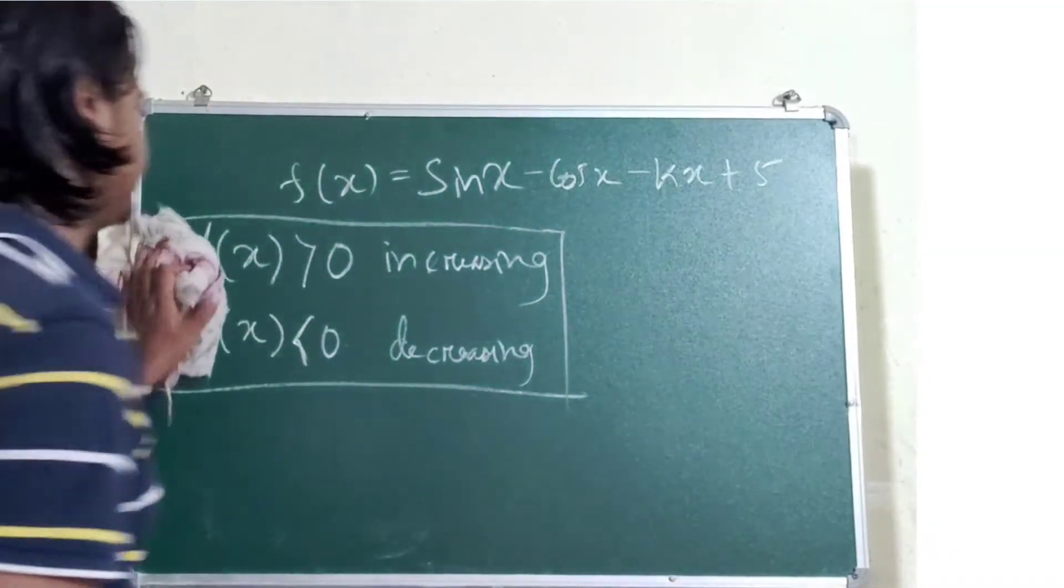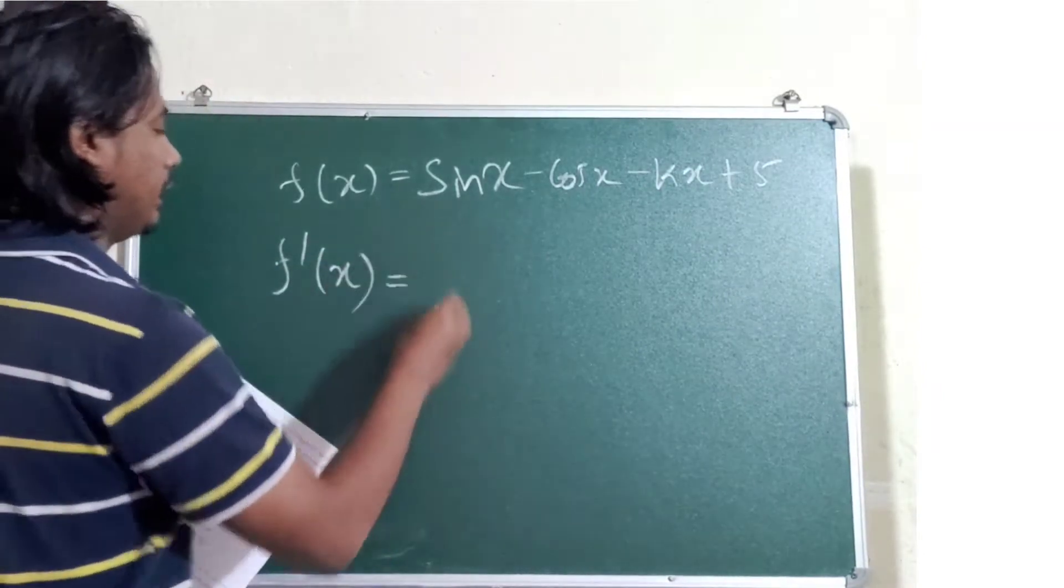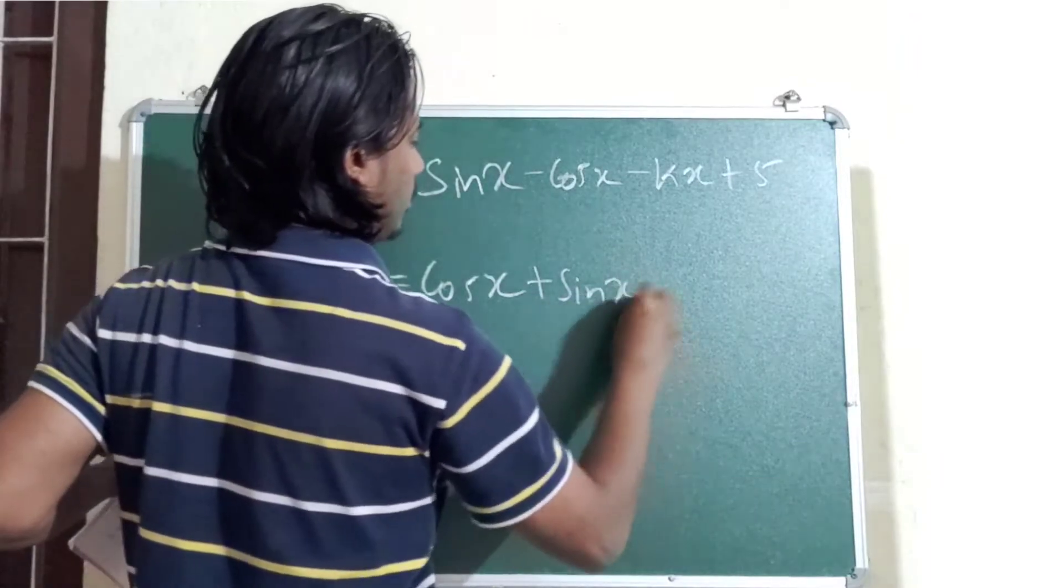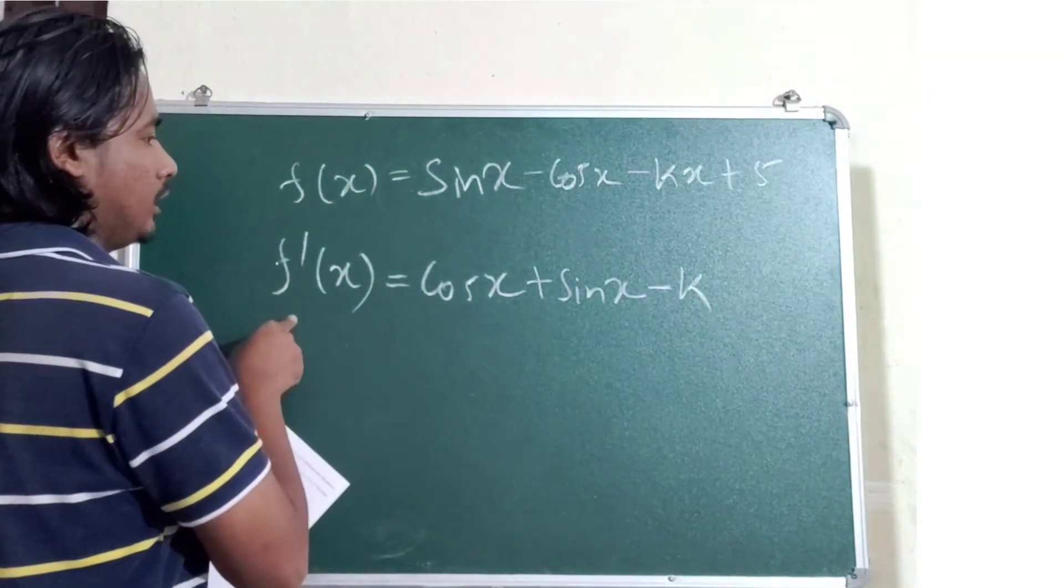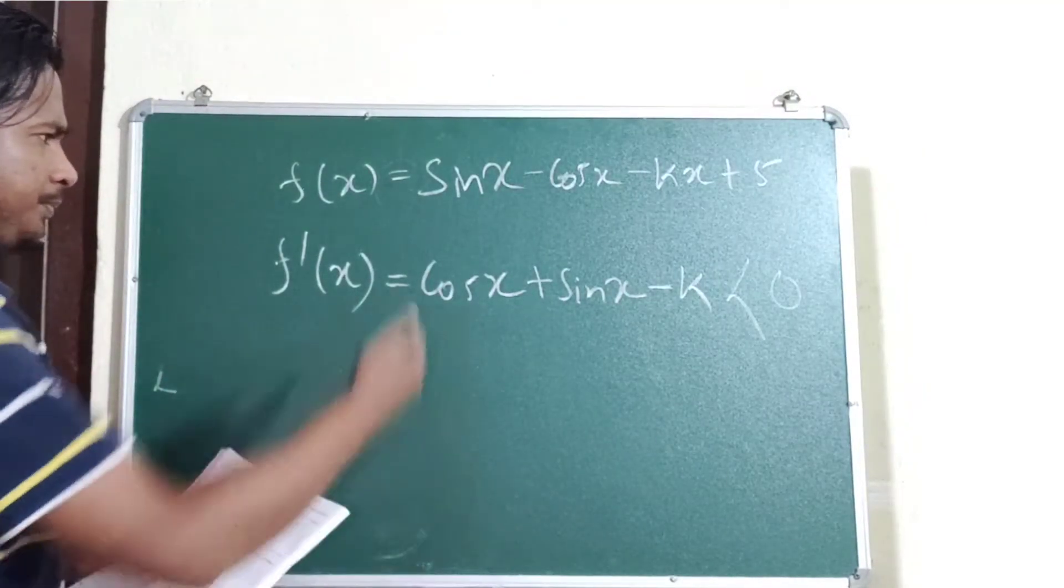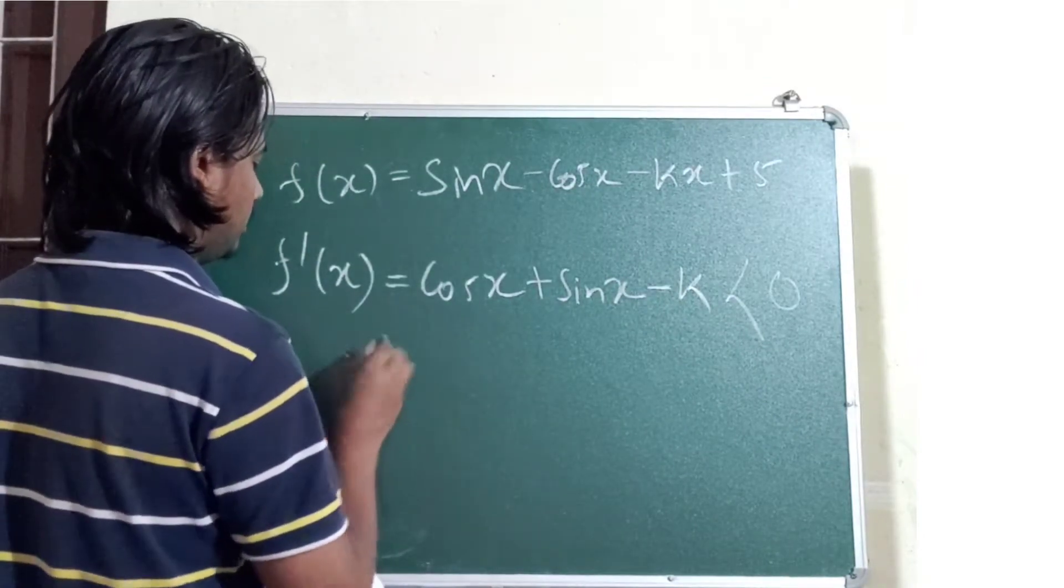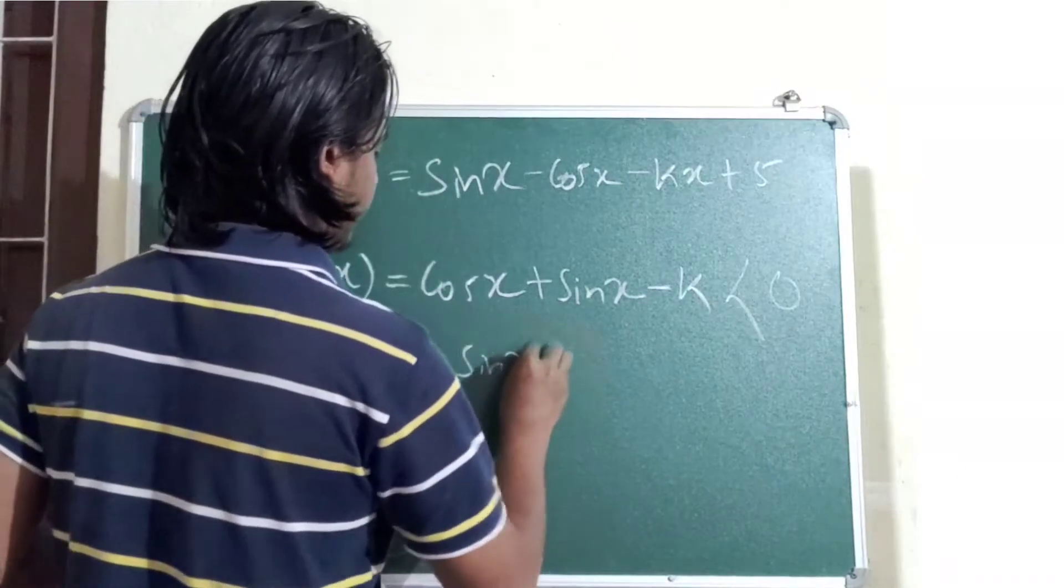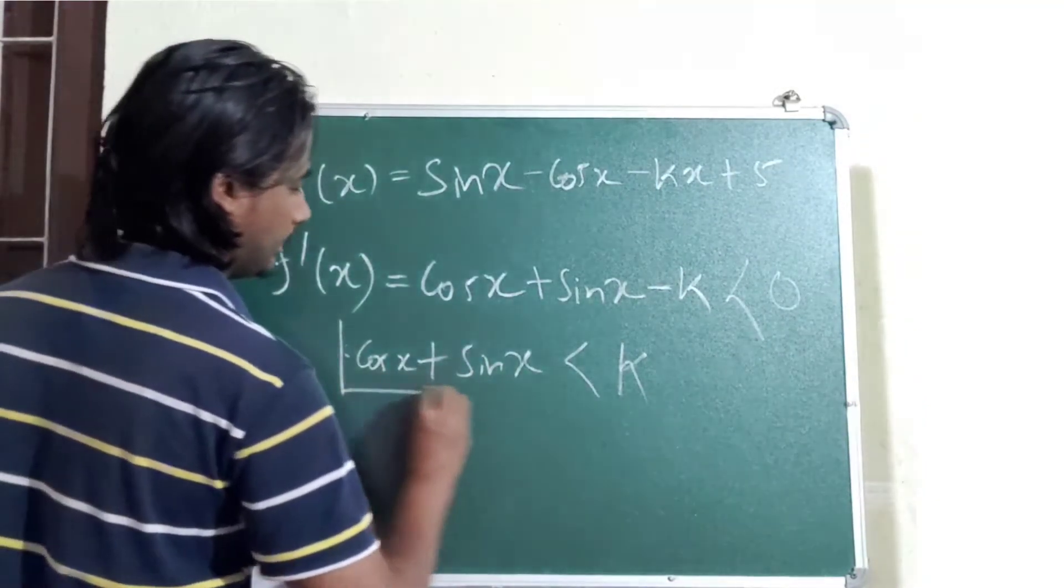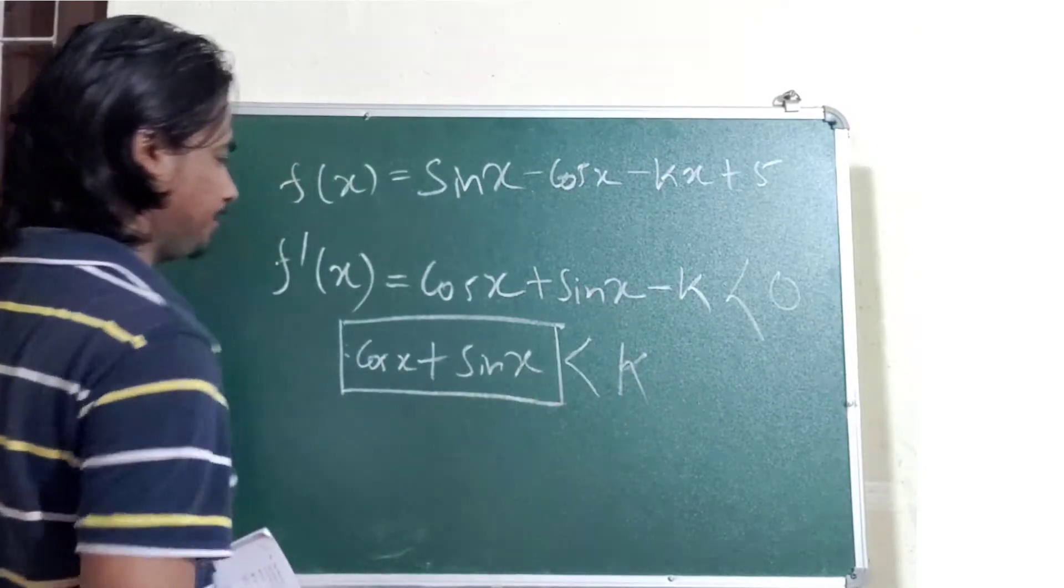For increasing, the first derivative f dash of x is greater than 0, it is increasing. So the function derivative is greater than 0 is increasing and derivative is less than 0 is decreasing. So the condition is the function is decreasing. So I first find the derivative.